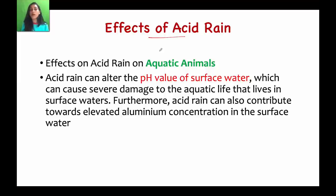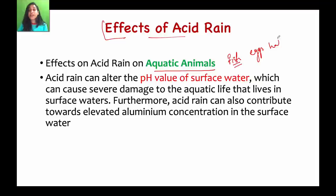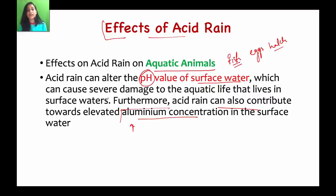Regarding aquatic animals specifically: many fish cannot properly hatch their eggs due to acid rain. The surface water chemistry also changes. Acid rain can contribute to elevated aluminum concentration in water, which is harmful to aquatic animals. Surface water quality is significantly degraded by acid rain.